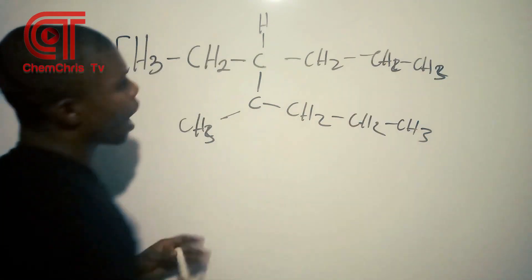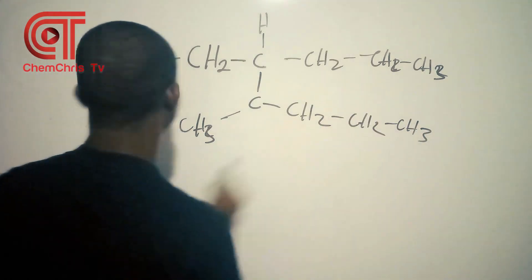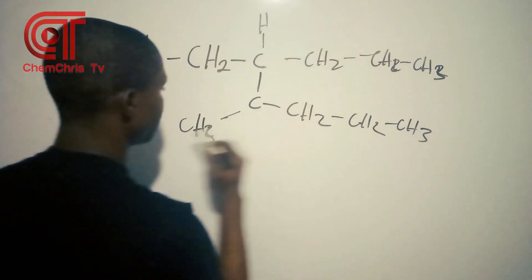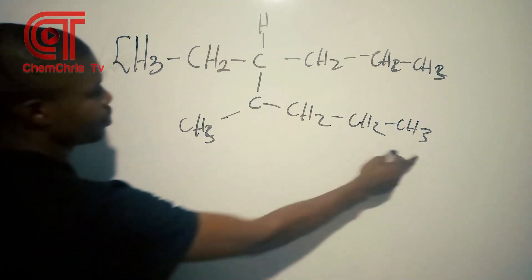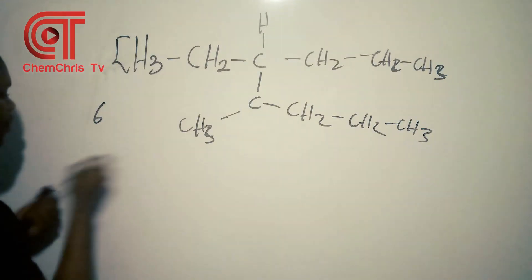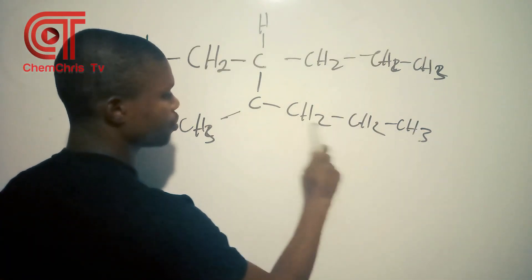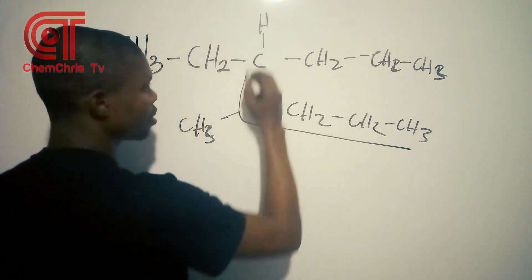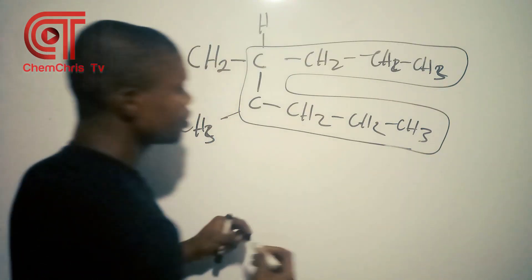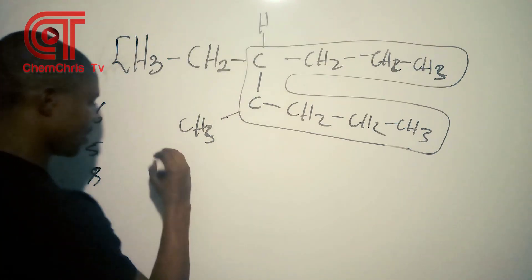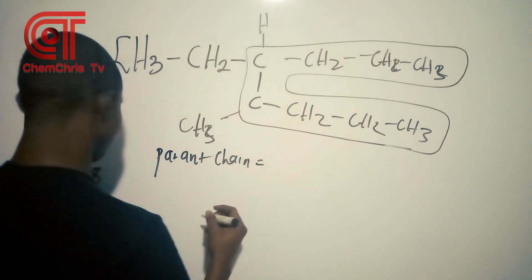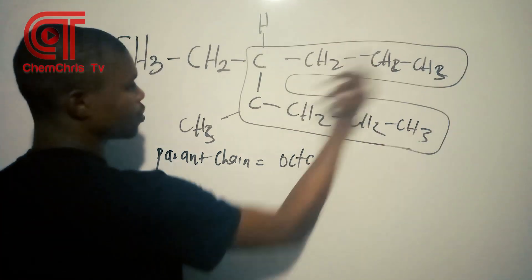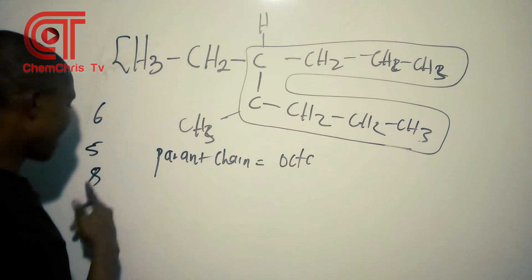From here to here we count: 1, 2, 3, 4, 5, 6 — so six carbons. From another path, 1, 2, 3, 4, 5 — five carbons. And from another path: 1, 2, 3, 4, 5, 6, 7, 8 — eight carbons. So the longest chain has eight carbons, making the parent chain octane.